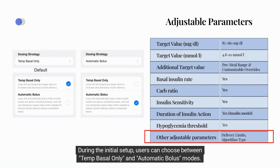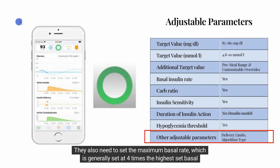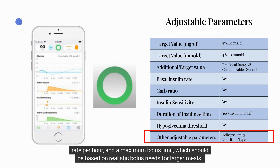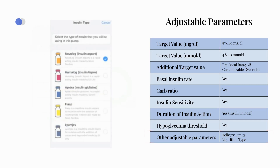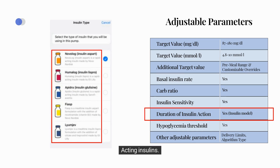During initial setup, users can choose between Temp Basal Only and Automatic Bolus modes. They also need to set the maximum basal rate, generally set at four times the highest set basal rate per hour, and a maximum bolus limit based on realistic bolus needs for larger meals. Furthermore, users have the option to choose an insulin model tailored for rapid-acting or ultra-rapid-acting insulins.